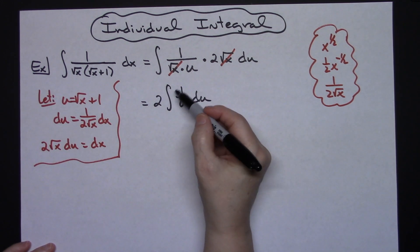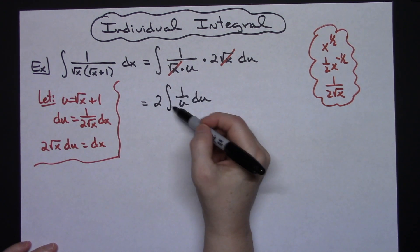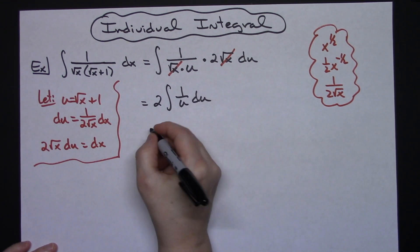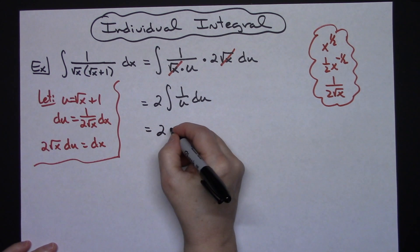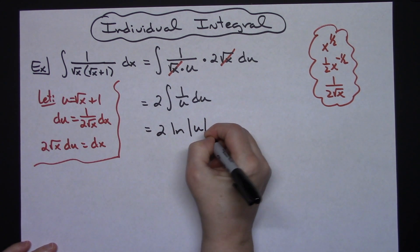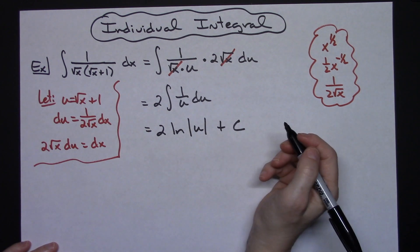At this point you need to have the integral of 1 over u memorized as natural log absolute value of u. So I can do 2 times natural log absolute value of u. I can go ahead and add the plus c at this point because I have integrated.